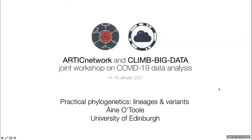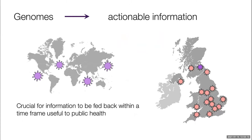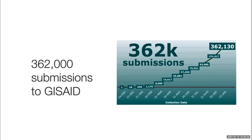To continue from what Verity's been talking about, I'm going to bring it down to some practical phylogenetics and describe how we've been using genomic surveillance in the current SARS-CoV-2 pandemic. We've had so much time and effort invested into sequencing SARS-CoV-2 around the UK and around the world. As of this morning, there are 362,000 submissions of SARS-CoV-2 genomes to GISAID, which is absolutely phenomenal.